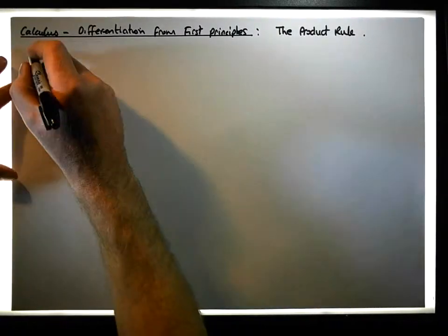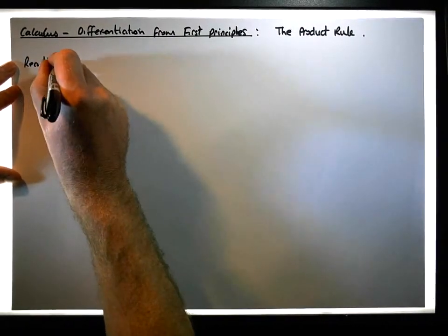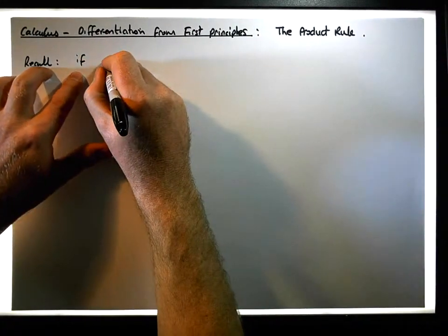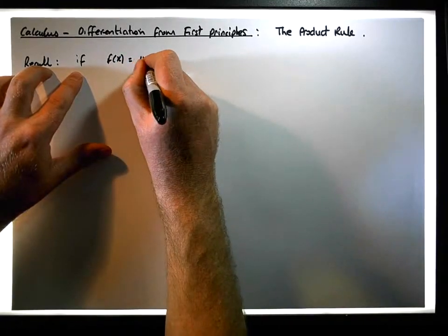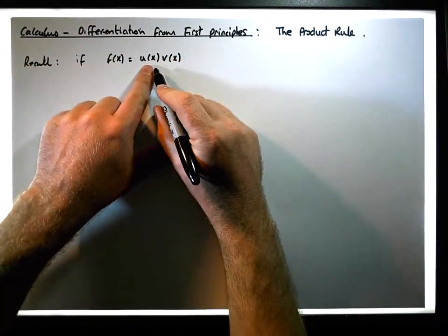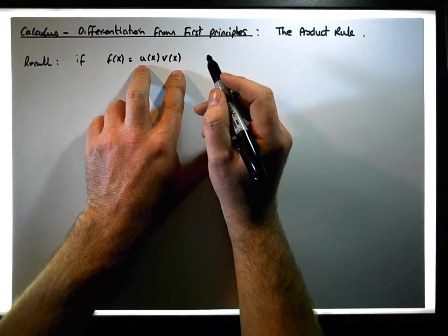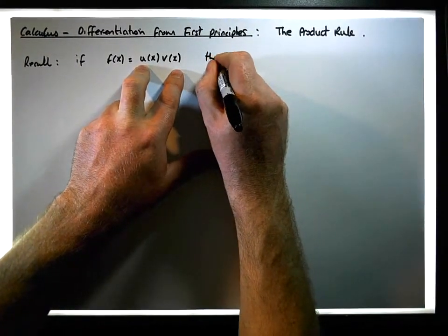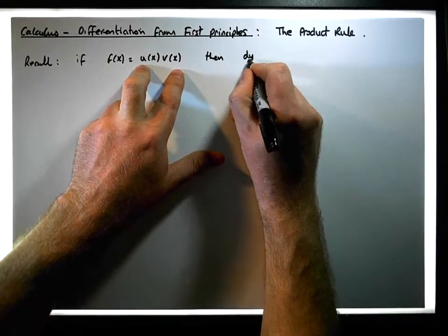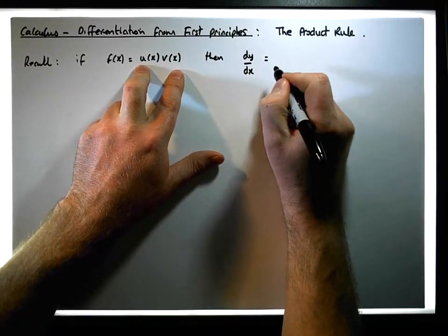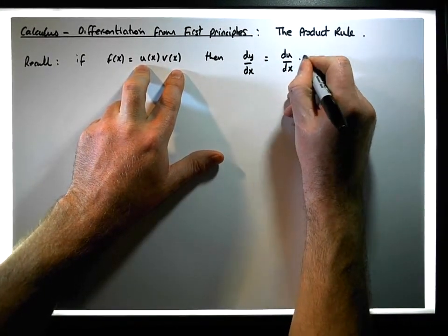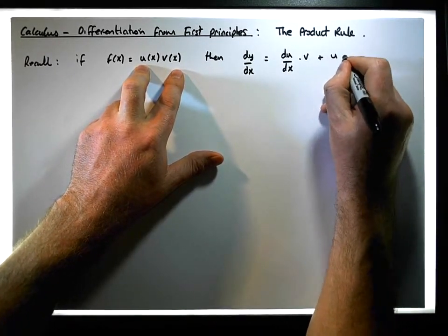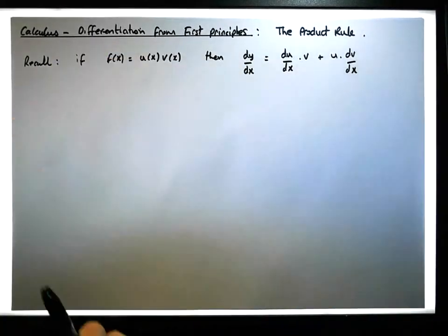Let's recall what the product rule actually says. The product rule says that if we have a function f(x) equal to u(x) times v(x), where both u(x) and v(x) are two functions in x and are also differentiable, then dy/dx is equal to du/dx times v plus u times dv/dx.